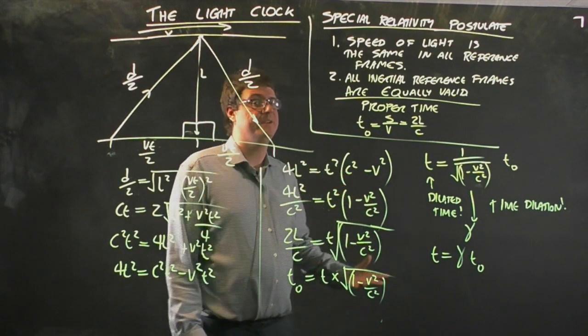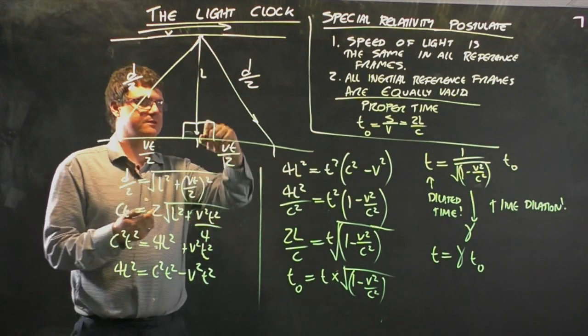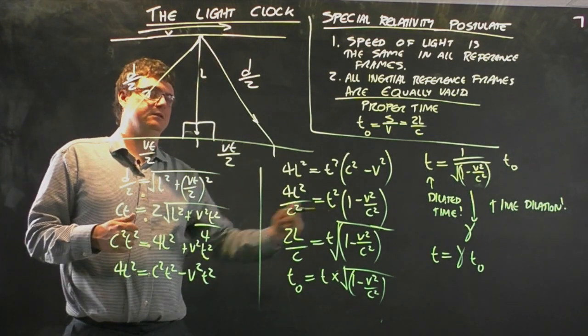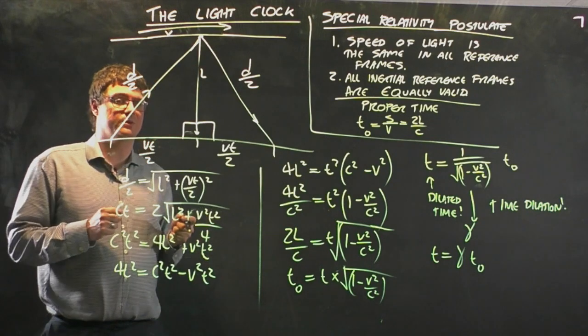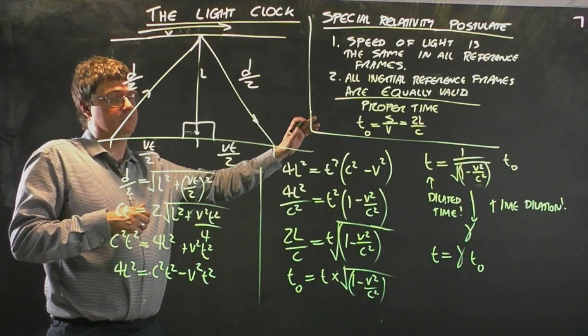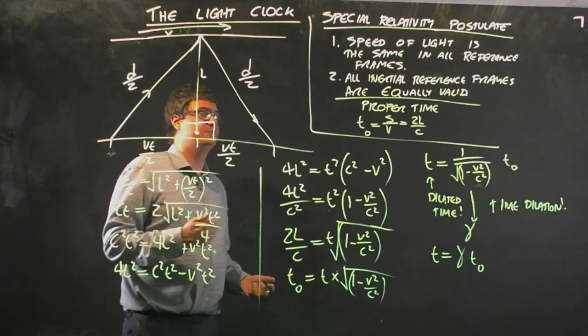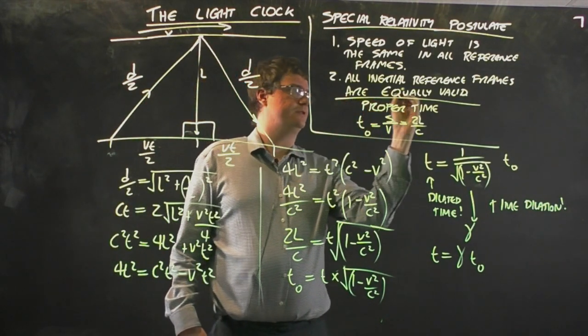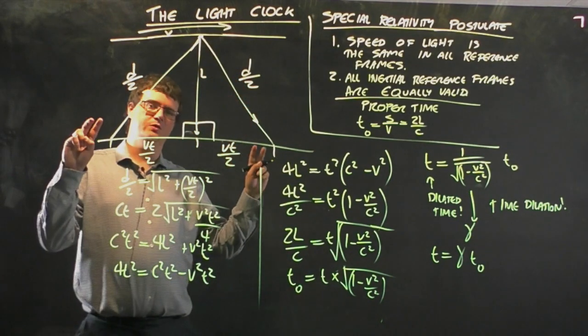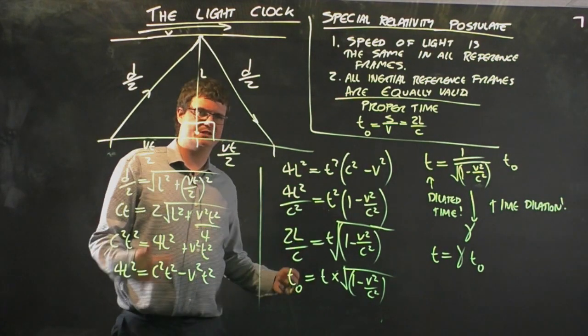It also does this in a symmetric way. If you're stationary relative to this light clock, you measure the time the tick is one second. Someone moving relative to you measures it taking longer. If they're also sitting in a spaceship that has a light clock on board, they measure their tick as taking one second and your tick as being longer. There's symmetry here. There must be symmetry because all reference frames are equally valid. There is no universal best reference frame, no universal stationary.